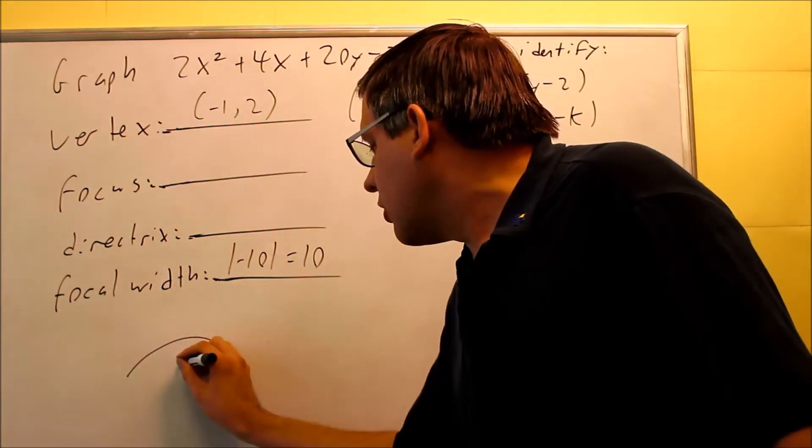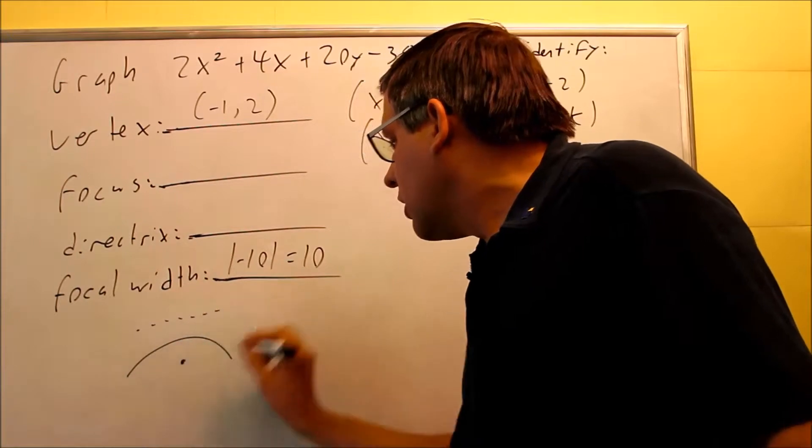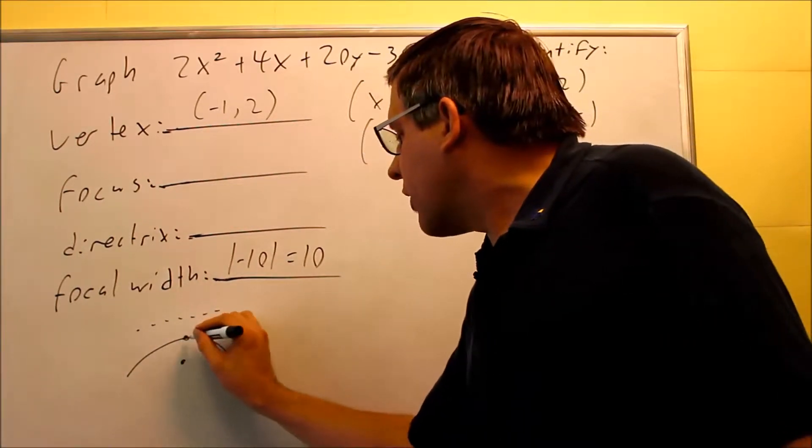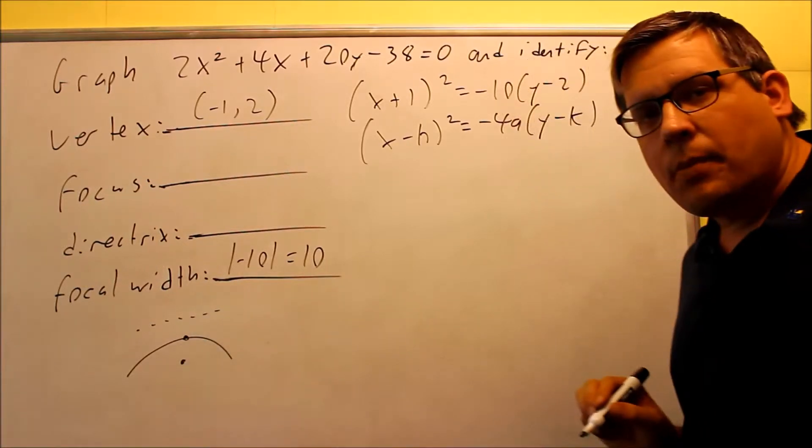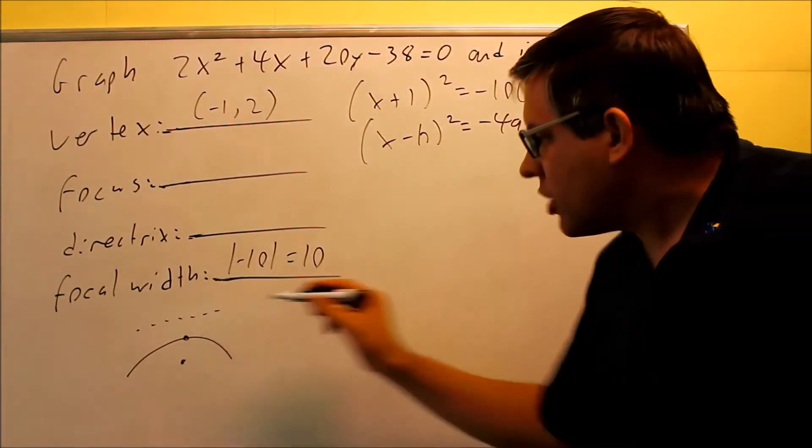So we have a parabola that opens down, which means that from your vertex we have to go down with our a value to get the focus and we're going to go up to get the directrix. So that's what the shape looks like.